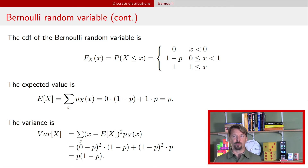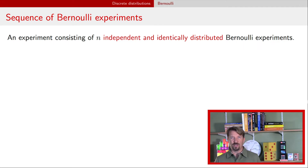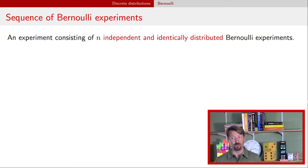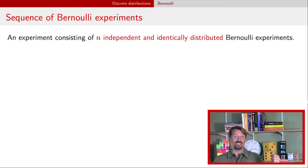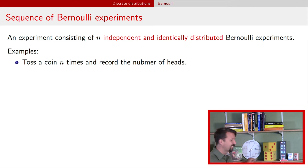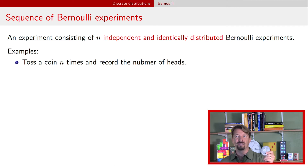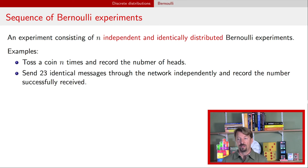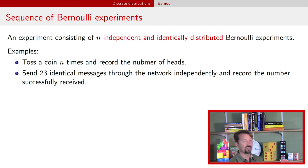Let's talk about a situation that's going to come up for our next random variable, the binomial random variable. We talked about having independent discrete random variables. I'm going to add to that now and talk about independent and identically distributed Bernoulli experiments. If we take a coin and toss it a whole bunch of times, recording whether it landed heads each time, that experiment can be thought of as independent and identically distributed. Similarly, if we have that communication network and we send messages at intervals, each of those trials can be thought of as independent and identically distributed.